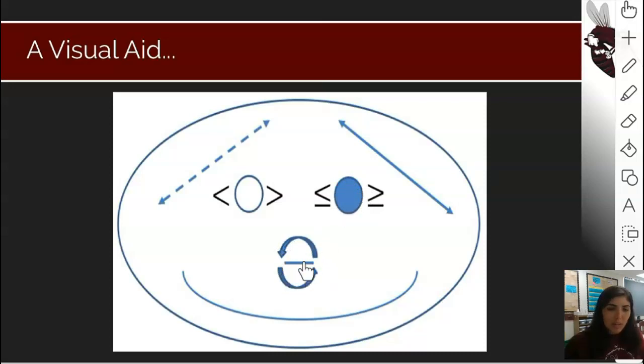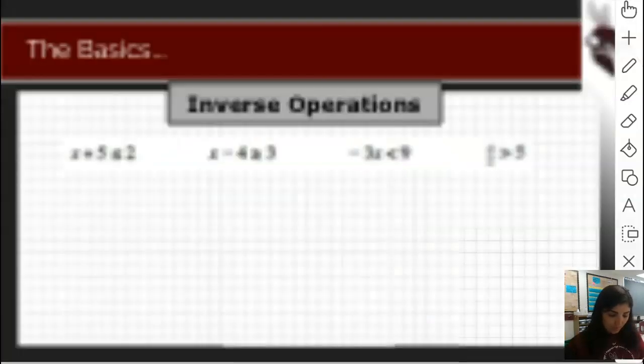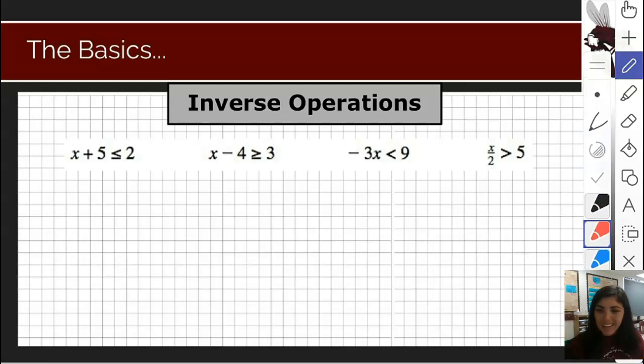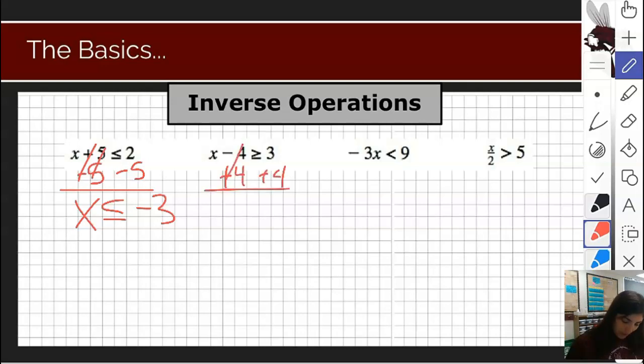The nose of this guy is super helpful because it reminds us that if we divide by a negative number, we're going to have to flip that inequality sign. Just a quick check on the inverse operations here. Inverse operations is almost exactly the same as when we did this with equations. X plus 5 less than or equal to 2. I'm still going to use the inverse of adding 5 to isolate this variable. This would be X less than or equal to negative 3. X minus 4 greater than or equal to 3. I'm going to add 4 to both sides because it's the inverse of subtracting. So then I have X is greater than or equal to 7.